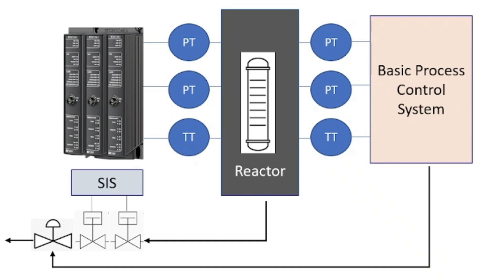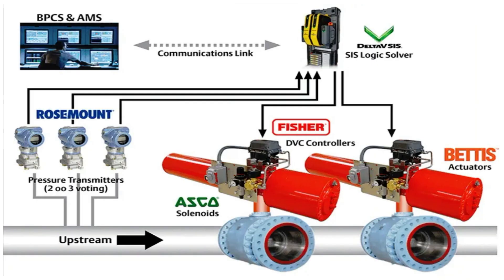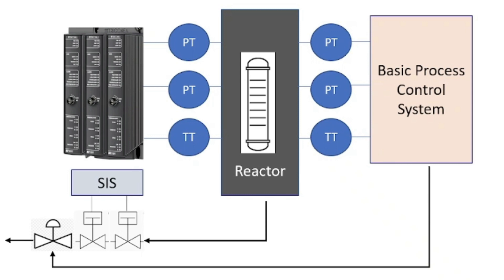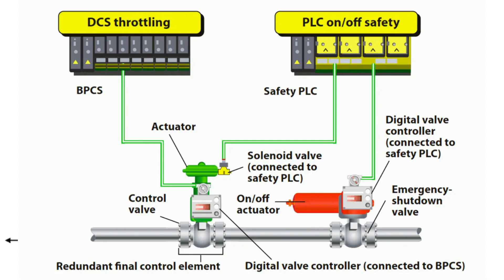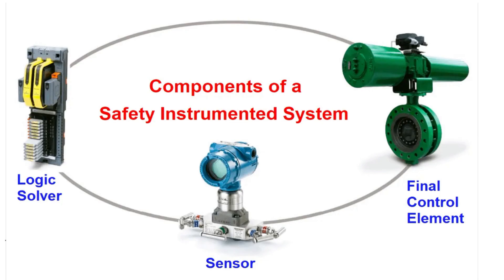These systems are implemented in supercritical places. There are several types of safety systems related to OT environments, including Emergency Shutdown, Process Safety Shutdown (PSS), Fire and Gas Systems (FGS), and HIPS. One of the most well-known is the SIS, which is composed of one or more Safety Instrumented Functions (SIFs).